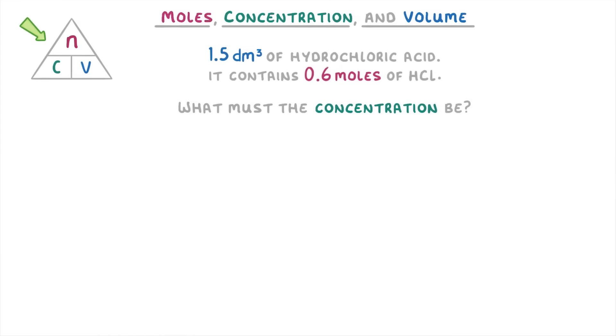What must the concentration be? Well, if we look at our equation, concentration is moles divided by volume, and as they're both already in the right units, we just do 0.6 divided by 1.5, which gives us a concentration of 0.4 moles per decimetre cubed.